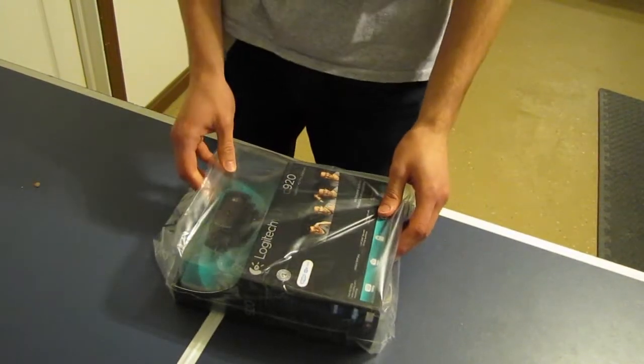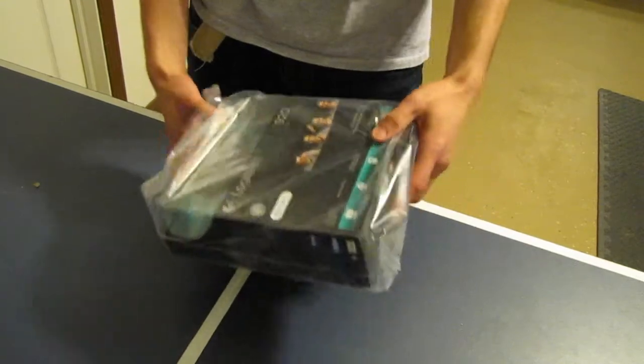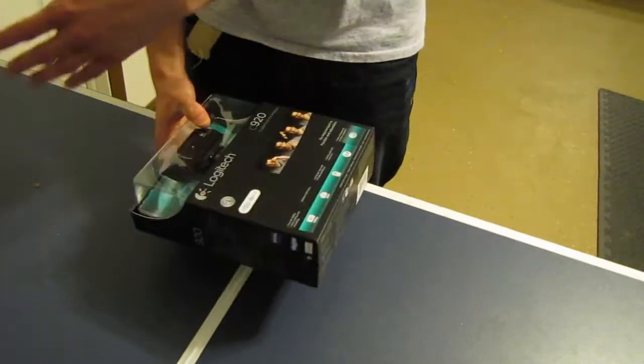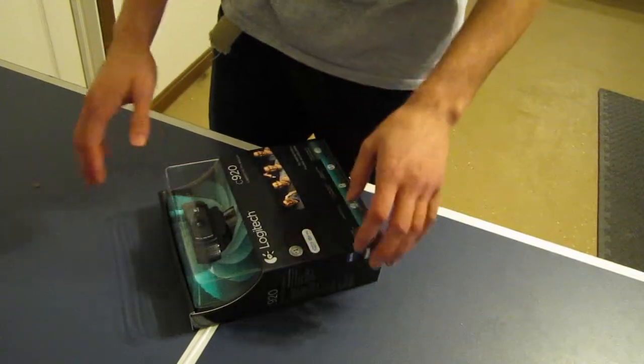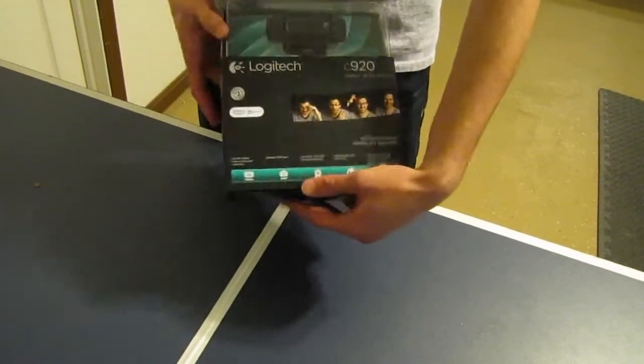And then finally we have the actual Logitech camera box. So it comes in this plastic sleeve. I'll be using that too, saving all those materials and this is what the box looks like.